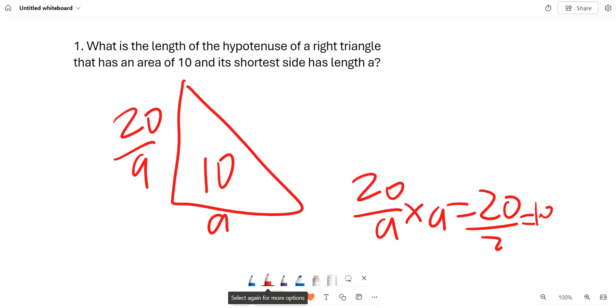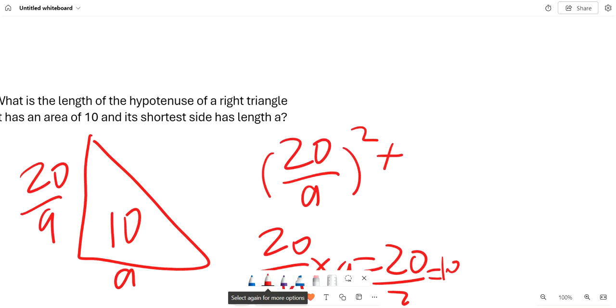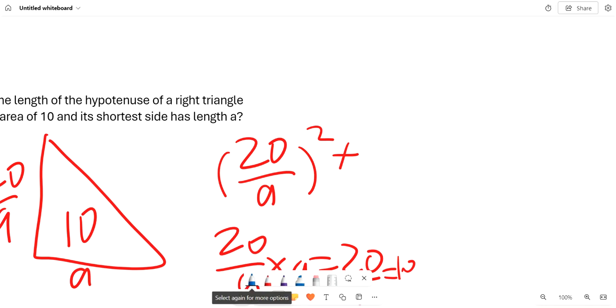Therefore, we can see that the hypotenuse is just 20 over a squared plus a squared. Well, I don't really need the parentheses. And that equals the hypotenuse.